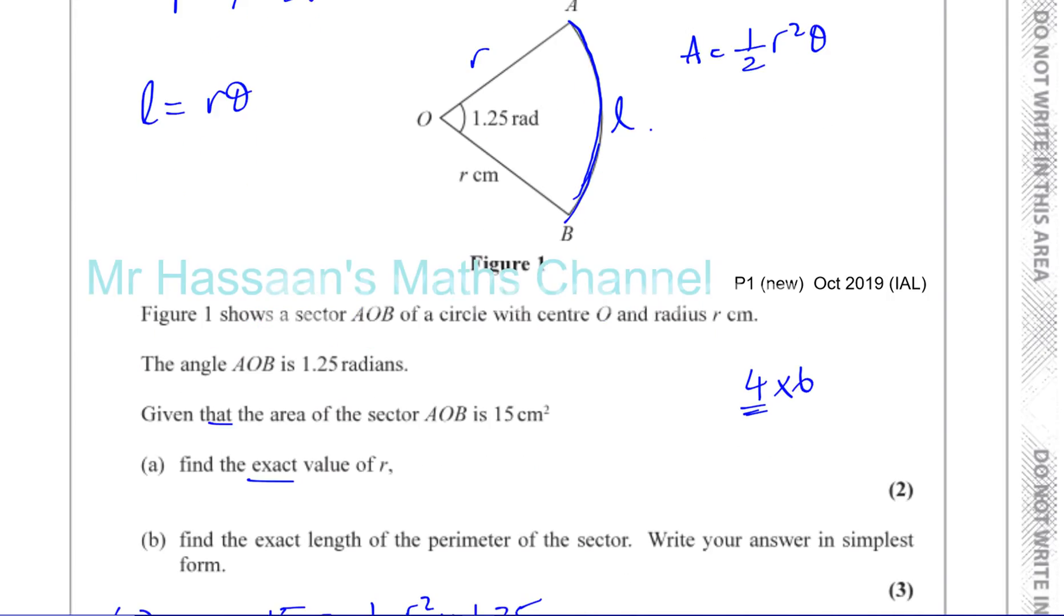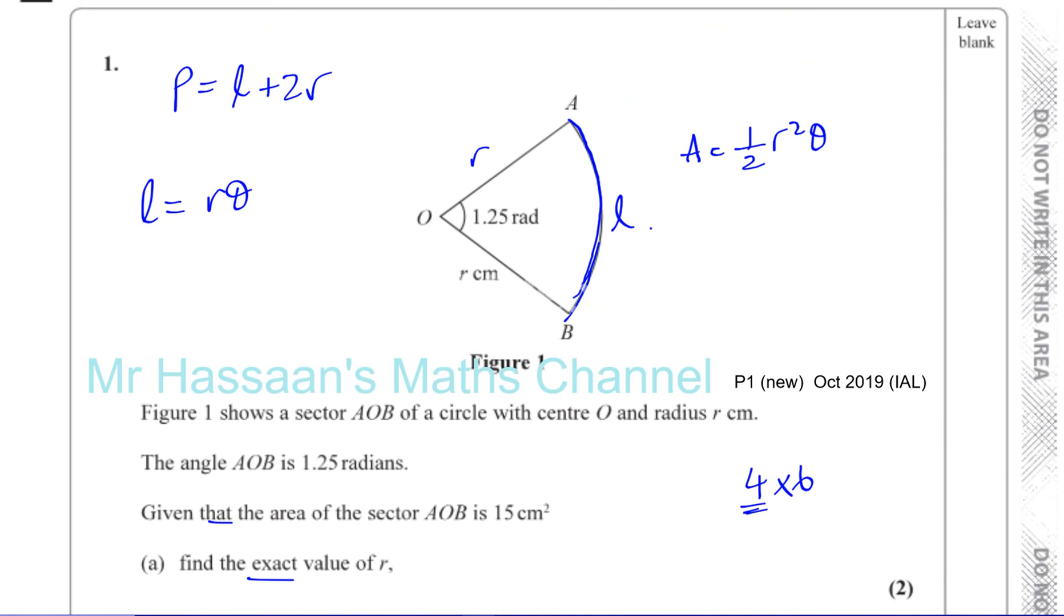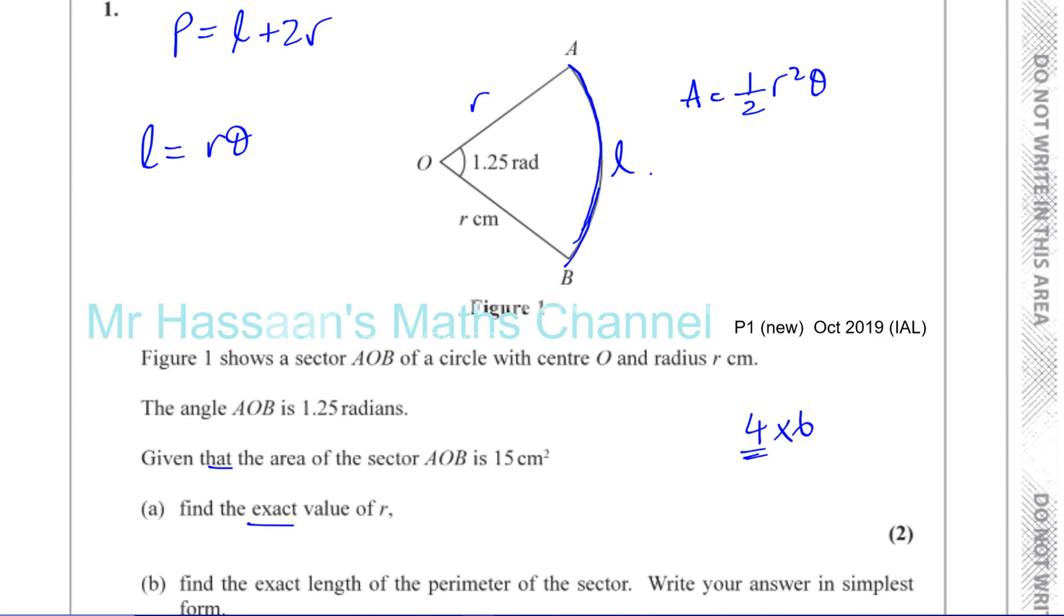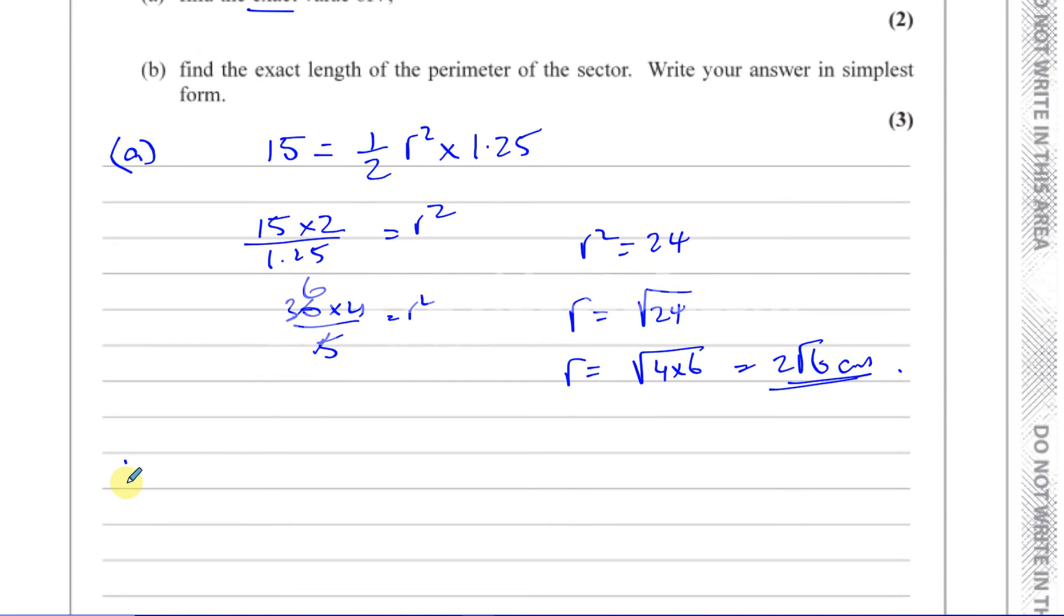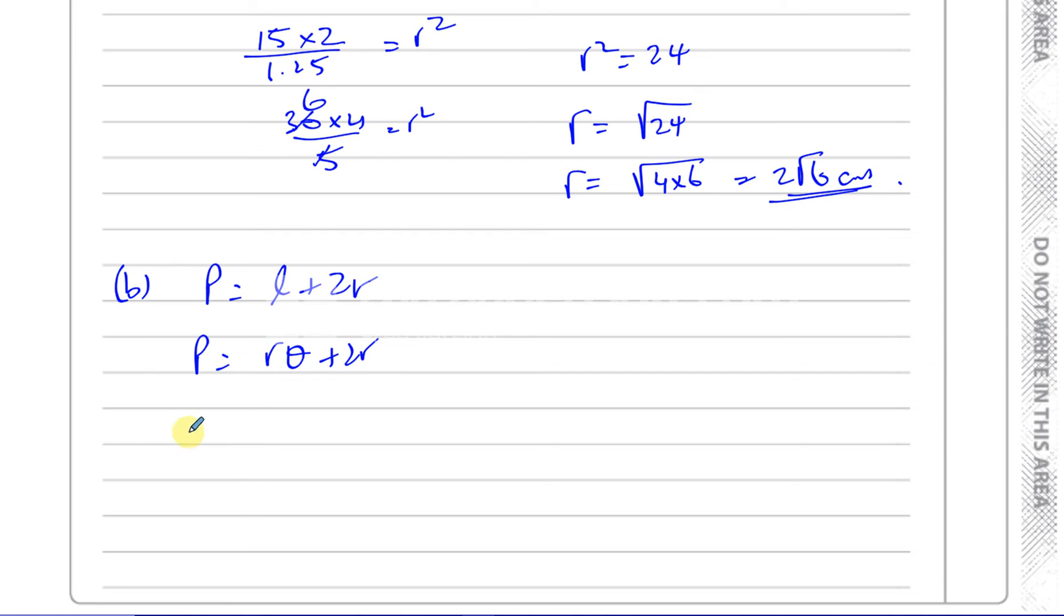So what we can say here is we've got R, which is found as 2 root 6, times theta, which is 1.25. So for part B, the perimeter is L plus 2R. So the perimeter is L. Now remember this is R theta plus 2R. And we know the radius we've found already is 2 root 6. So you have 2 times root 6 times 1.25, which is 5 over 4. Plus 2 times R, which is 2 times 2 root 6.